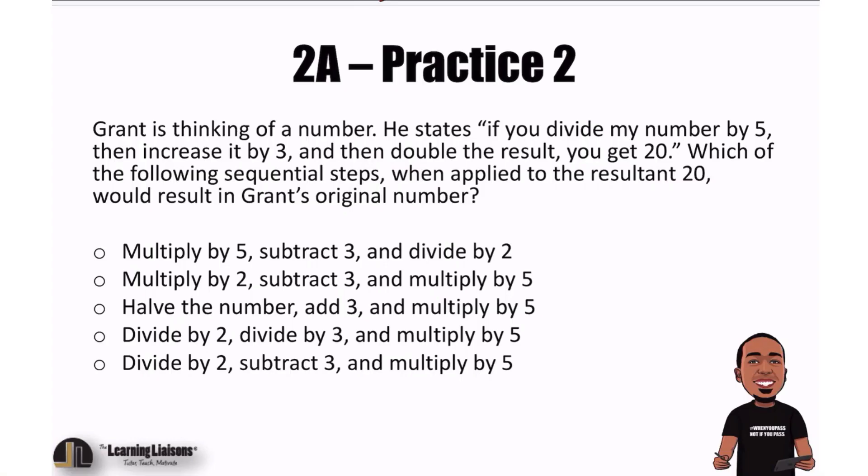Think about it for a second. We're talking about Grant and he's thinking of a number. He said he does a couple things to that number and then he gets 20. Grant went forward with some steps and resulted in 20. If we want to work with the 20, we will then have to go completely backwards to get to the original number.